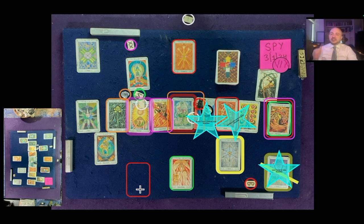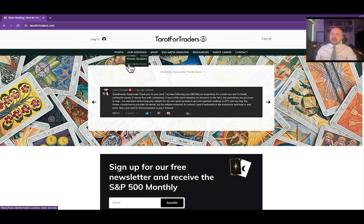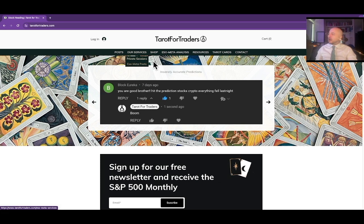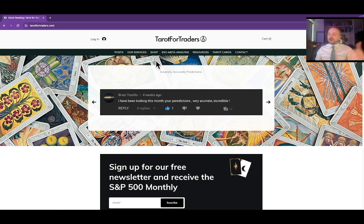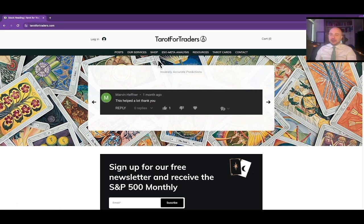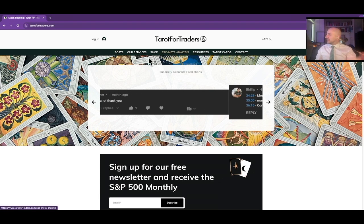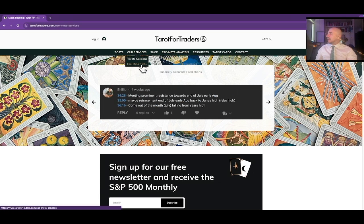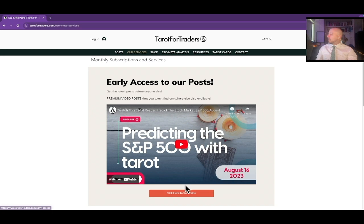And guys, if you want to get this information sooner, check out early access on our website to all this information. It comes out roughly like a month ahead of where it comes out on the public YouTube, allowing for extra planning ability. It's really the only kind of analysis that you could do planning ahead with. But with that said, you can do that. So here at our services, ESO MetaPost, early access to a post, click here to subscribe.